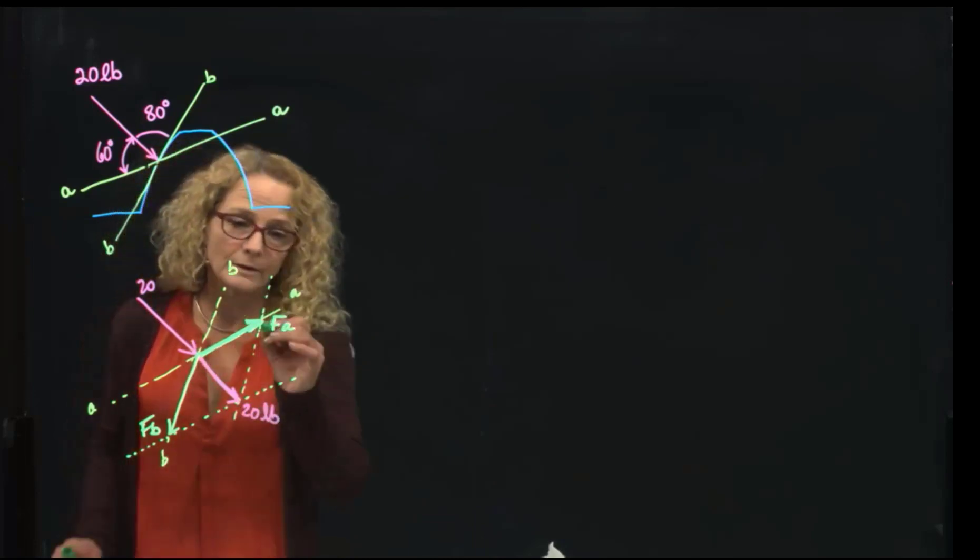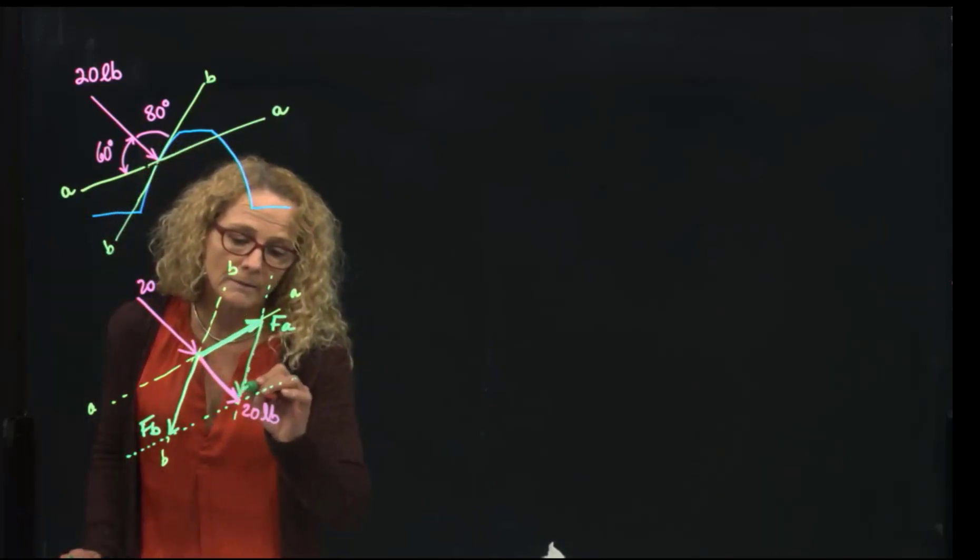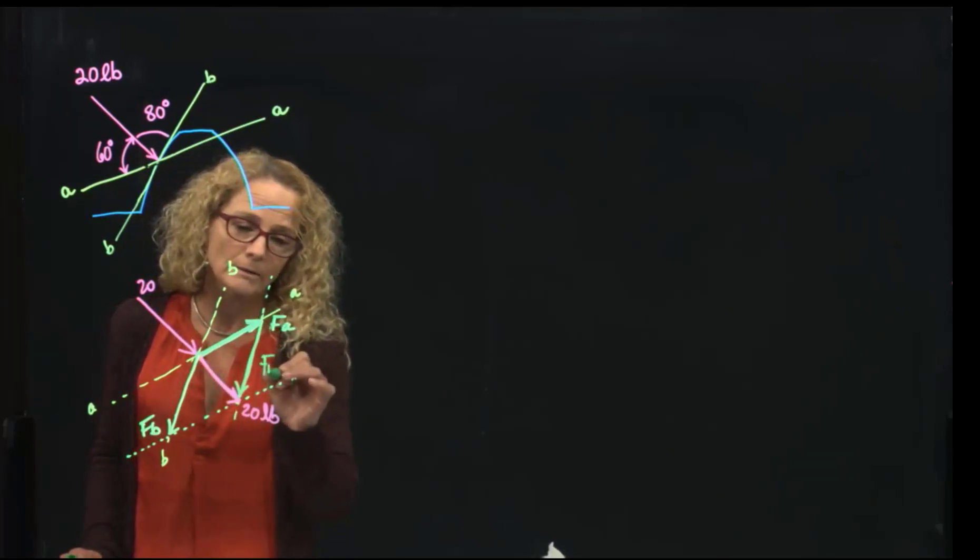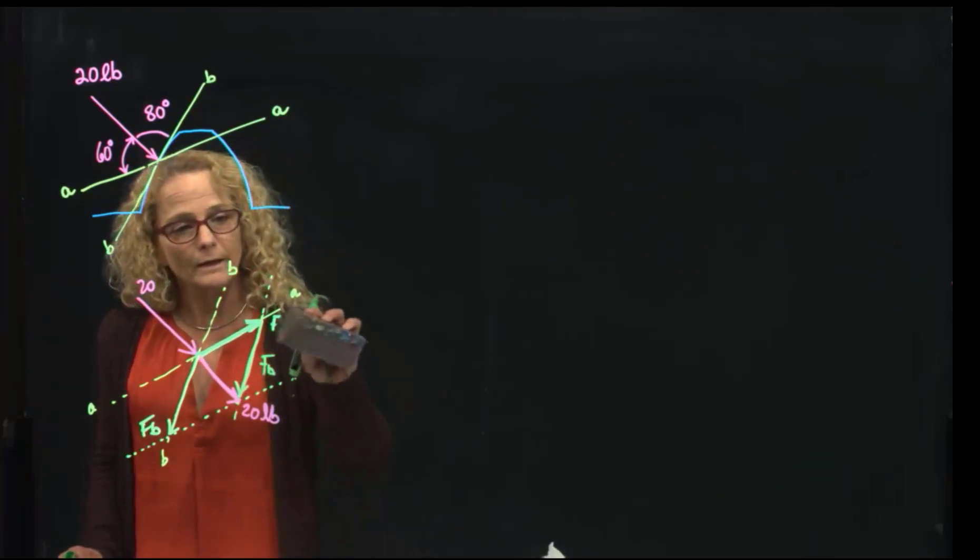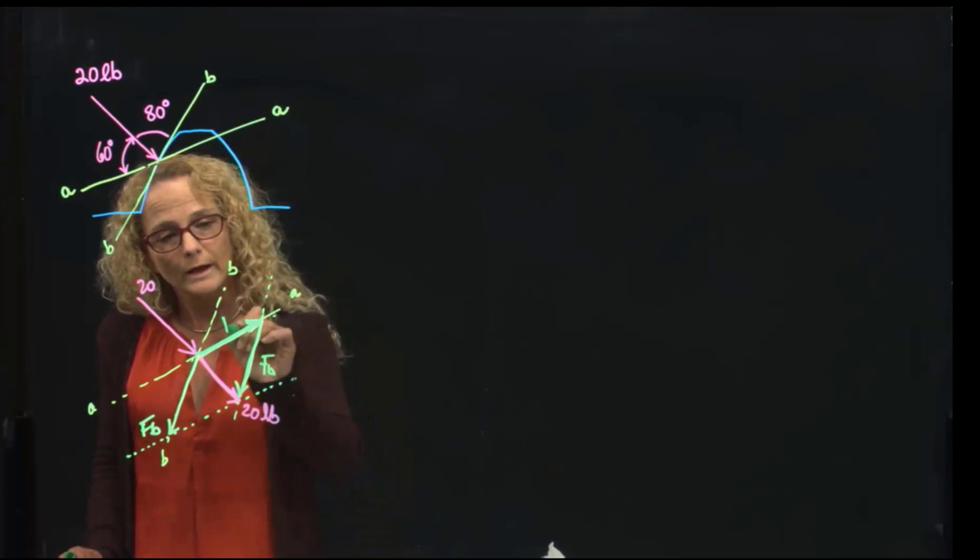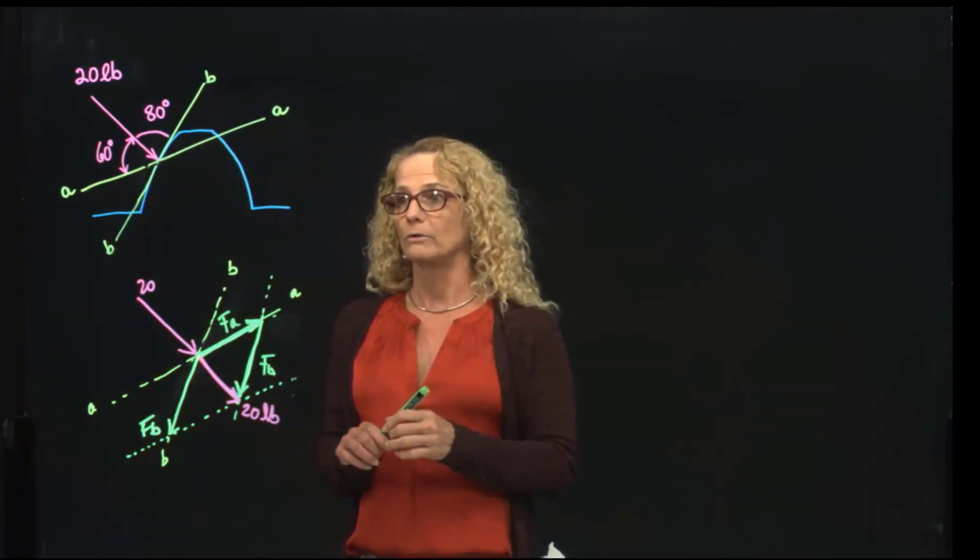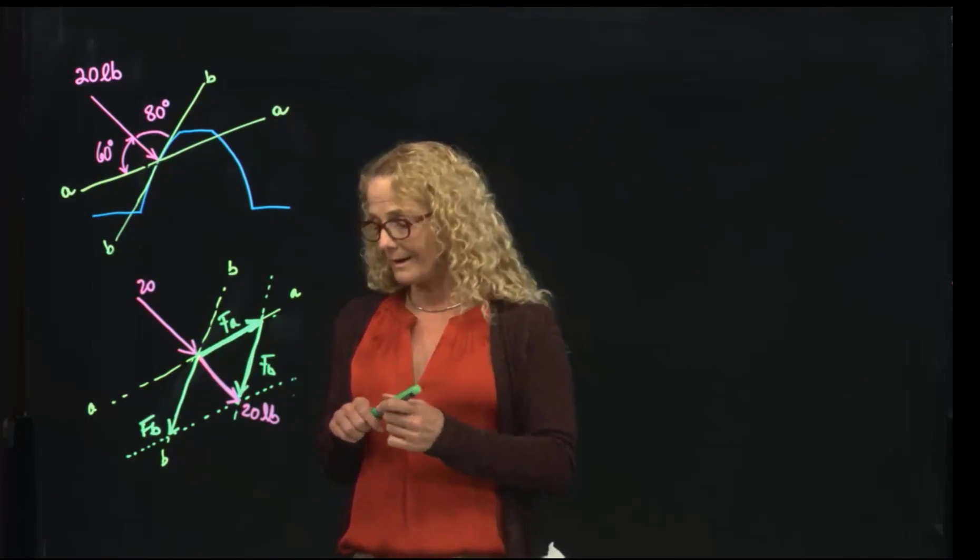So, if I name this FB, which is exactly the same vector as that one, and this one FA, I have described the three sides of my triangle. Let's go now with the angles.